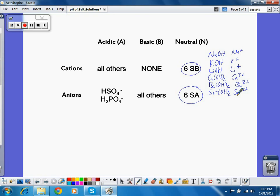So if we have other positive ions in solution, they form acidic solutions. So my soluble hydroxides, those six positive ions are neutral in solution. Any other cation is acidic.